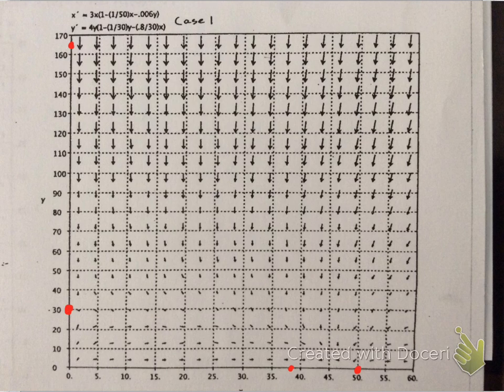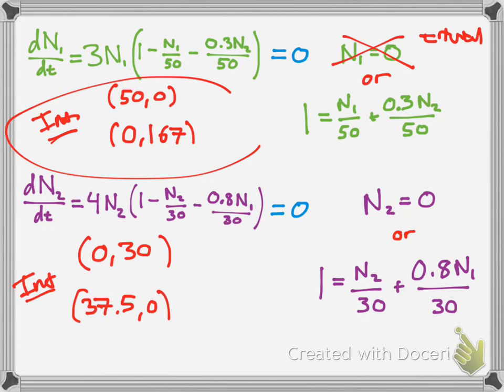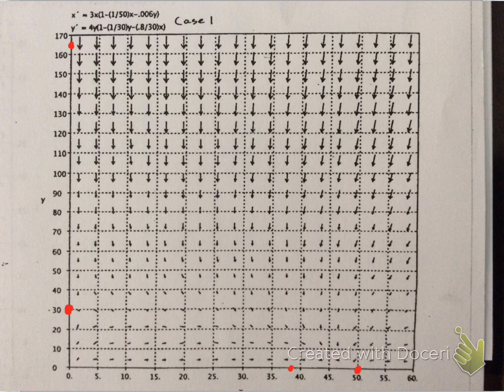Okay. So this graph kind of looks complicated, but right now, just ignore these arrows, or the directional field or vector field. So right now, we're just going to focus on the intercepts that we plotted, or that we figured out from the equation here.